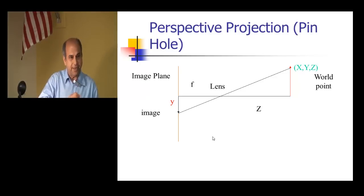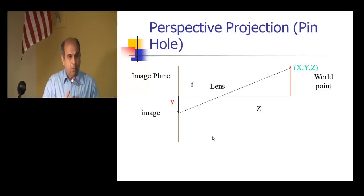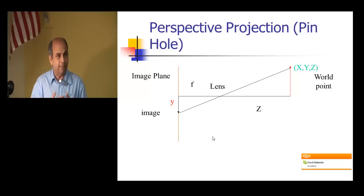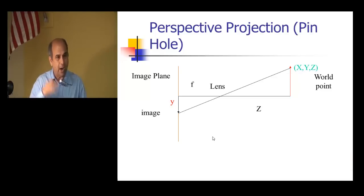Computer graphics is another area which is the inverse of computer vision. In computer graphics, we have a 3D model and project it onto a 2D screen to see what is displayed. So graphics goes from 3D to 2D, but in vision we go from 2D to 3D. The most simple model for how 3D is projected to 2D is called the pinhole camera model, or perspective projection.